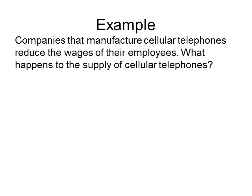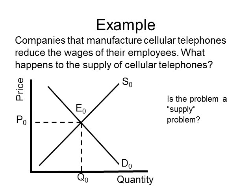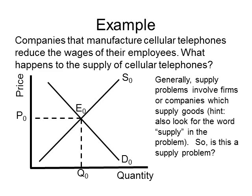Let's look at an example of a supply shift problem. The example reads: companies that manufacture cellular phones reduce the wages of their employees. What happens to the supply of cellular phones? The first step is to create a supply and demand diagram on paper, or use one from the CD or Blackboard. The next step is to decide whether this is a supply problem — and yes, it is.